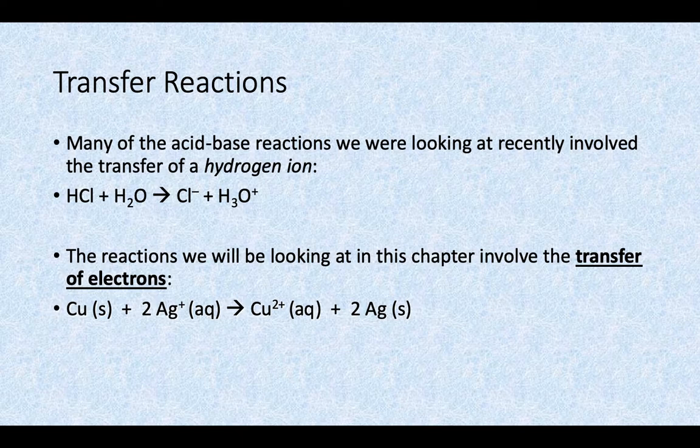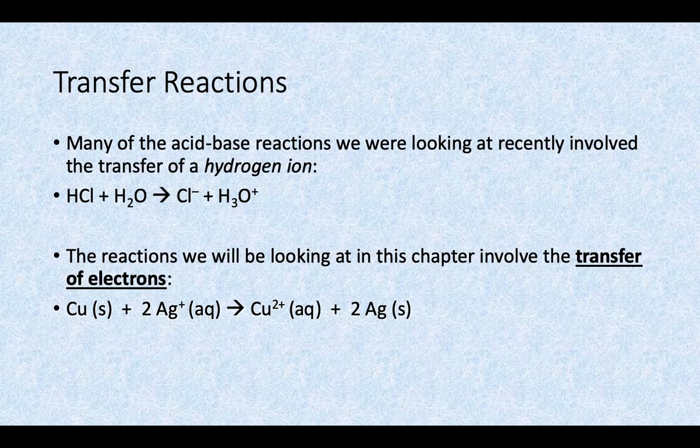During that reaction, the copper on the left is neutral, but then it becomes part of a compound on the right-hand side — maybe a copper(II) nitrate solution. Again, the nitrate gets canceled out as a spectator. When copper goes from being an element by itself to part of an ionic compound, it used to be neutral and now has a charge of positive two, so it must have lost two electrons during the course of that reaction.